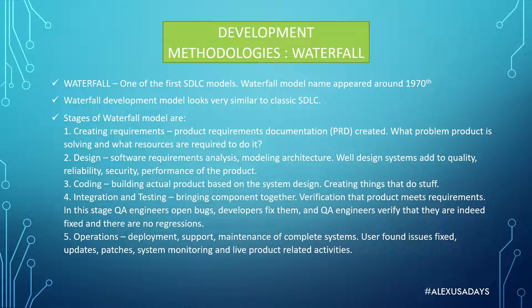QA engineers verify that bugs are fixed and that no new regressions were introduced by the fixes. Then there's the fifth and last stage called operations. During this stage there's deployment, support, and maintenance. If users find issues, they're fixed. There are updates, patches, system monitoring, and all live-product-related activities — like customer support, installation guides, and updates — whatever is needed to make sure the product is stable and working as expected.